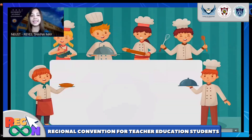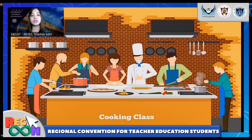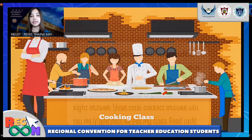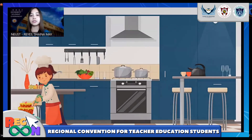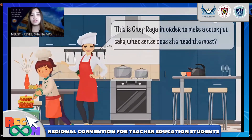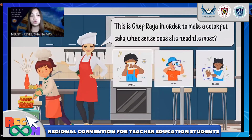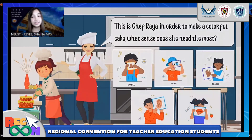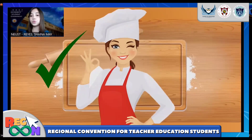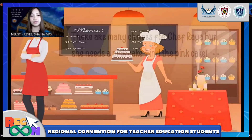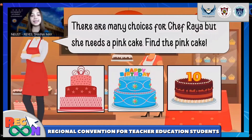Here is the Cooking Makes Sense part of our instructional material. This contains an adventure in a cooking class where students can assess themselves. Students will help five chefs in the room by answering questions correctly. The teacher shows the chef's question and students answer what sense organ the chef should use to do their task correctly. For example, this is Chef Raya: to make a colorful cake, what is the sense you need the most? Students choose from the five senses. We also integrate voiceover to help auditory learners enjoy the assessment.